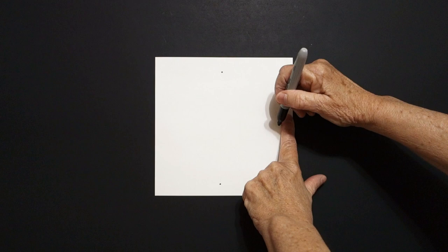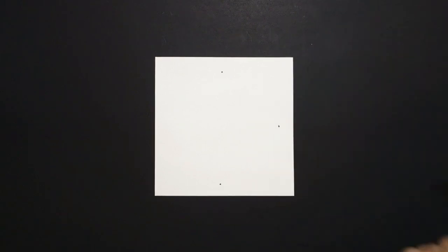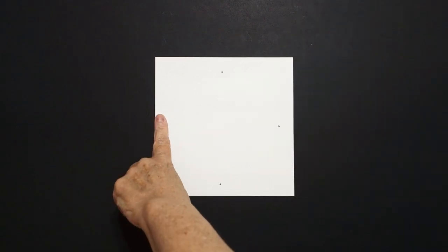One finger in the middle, on the right, I put a dot. One finger on the left, in the center, I put a dot.